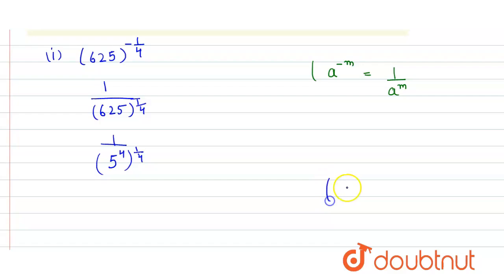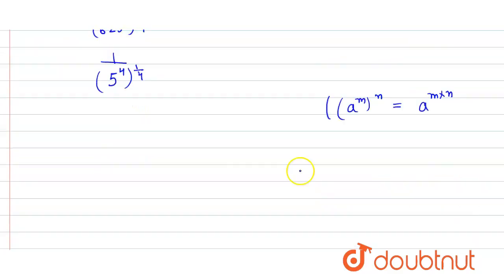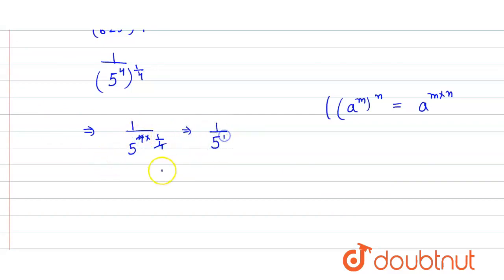Now we use another property of exponents according to which a raised to power m, raised to power n, is equal to a raised to power m into n — the powers simply get multiplied. So here we get 1 divided by 5 raised to power 4 into 1 by 4. The 4 cancels and we get 1 divided by 5 raised to power 1, which equals 1 by 5. That's the answer to the first part.